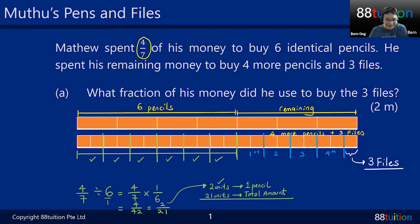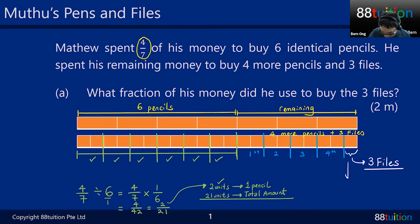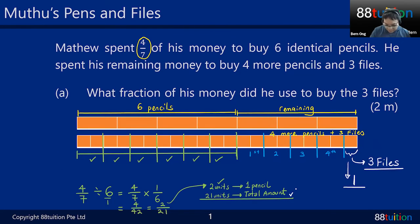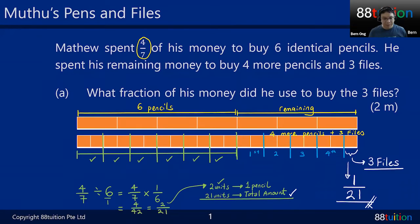Isn't it clearer if you chop it up nicely? What fraction of his money did he use to buy the three files? That last portion is one unit. What fraction means you give it as a fraction — one out of what? The total is 21. So the answer is one out of 21 is spent on the three files.